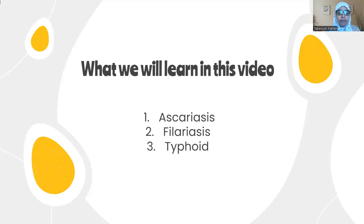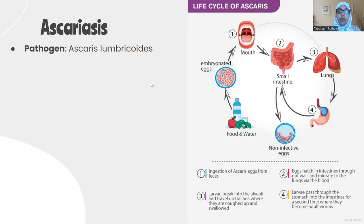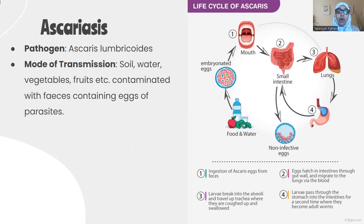Let's begin with ascariasis. Ascariasis is an infectious disease related to the GI tract or intestinal tract. It is caused by roundworms known as Ascaris lumbricoides. It is an endoparasitic roundworm, also called a nematode. Endoparasitic means they invade and go inside the intestinal cells.